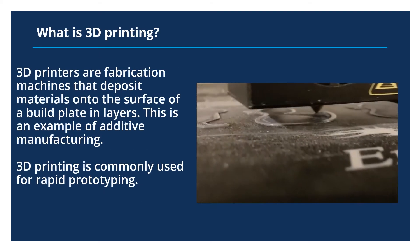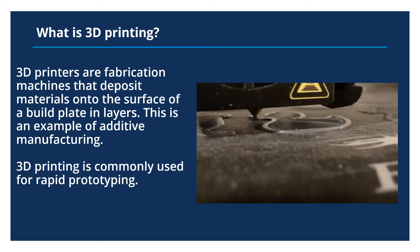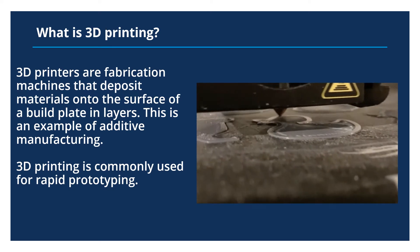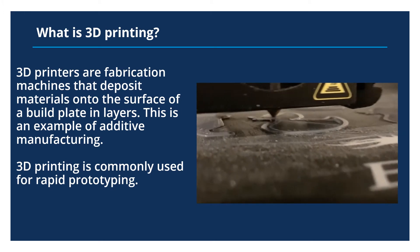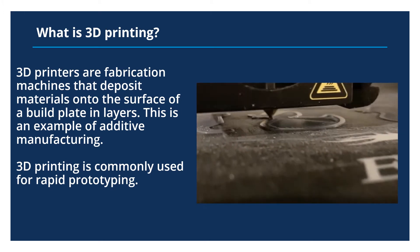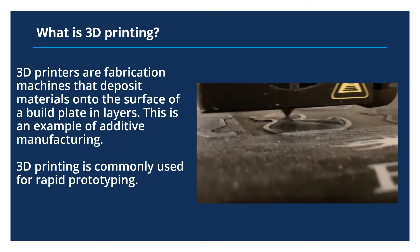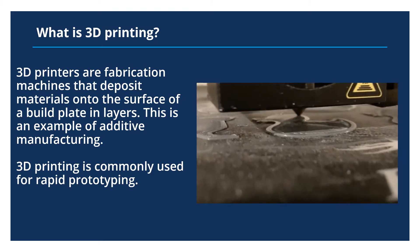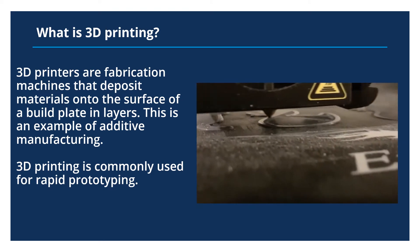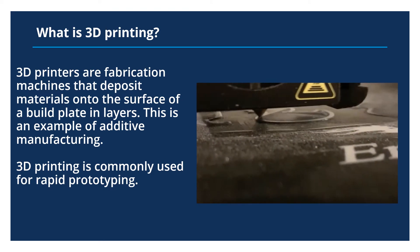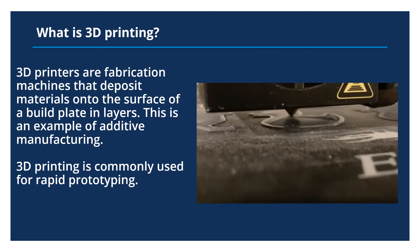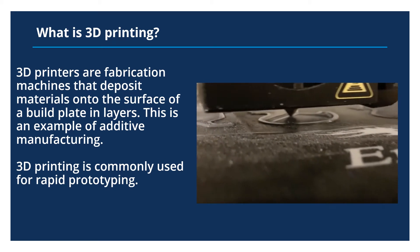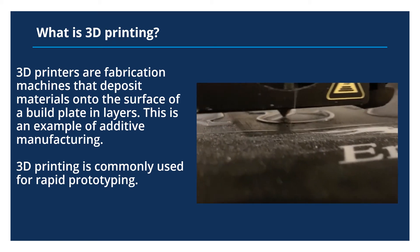What is 3D printing? 3D printers are machines that deposit material onto the surface of a build plate in layers. The machine will do a layer, then move up vertically and do another layer, and move up vertically again until you have an object. 3D printing is commonly used for rapid prototyping, which is the fast fabrication of an object using computer-aided design, or CAD.